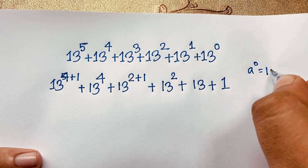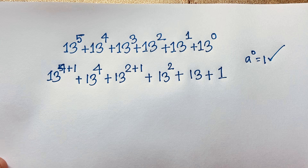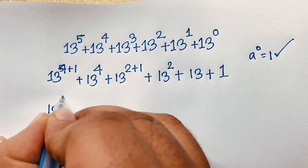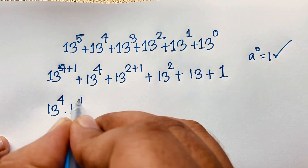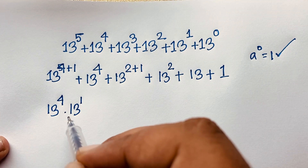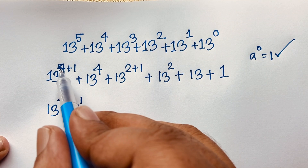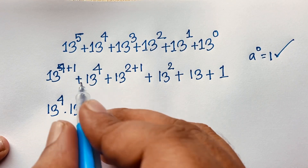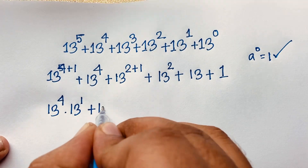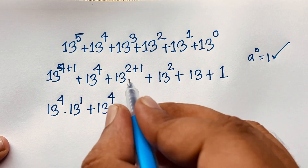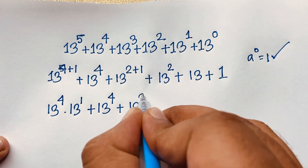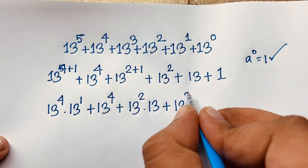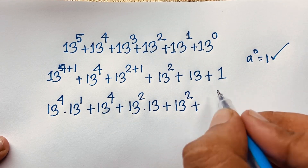Now I can rewrite this expression: 13 power 4 times 13 power 1, because we know the exponential law — a to the power n plus m equals a to the power n times a to the power m. Then here 13 power 4, plus 13 power 2 times 13 power 1, plus 13 power 2 plus 13 plus 1, which will be 14.